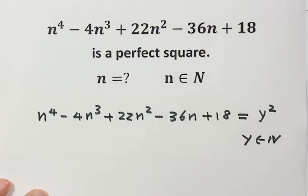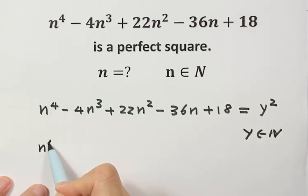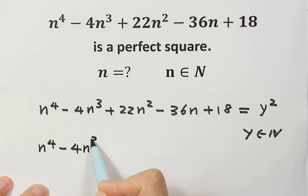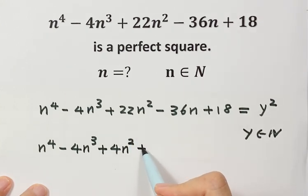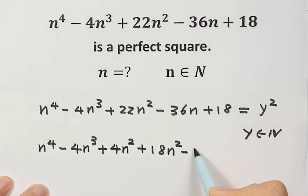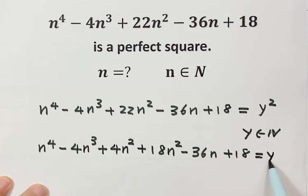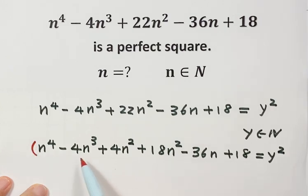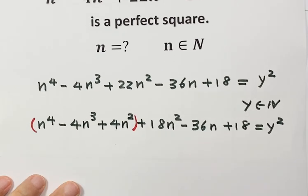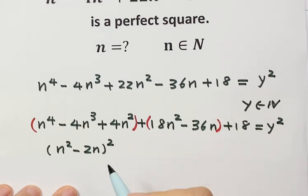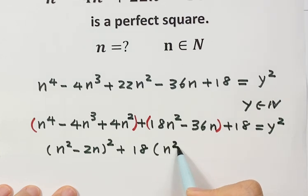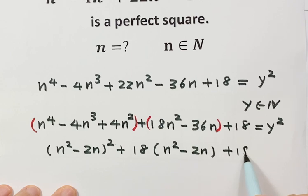The next step, we're going to reorganize the left-hand side. First, take n to the fourth minus 4n to the third. If we add one more term, 4n squared, we can make it a complete square. We have 22n squared, so we still have 18n squared left, plus the rest of the terms. We're going to combine these three together, giving us n squared minus 2n, whole thing squared.